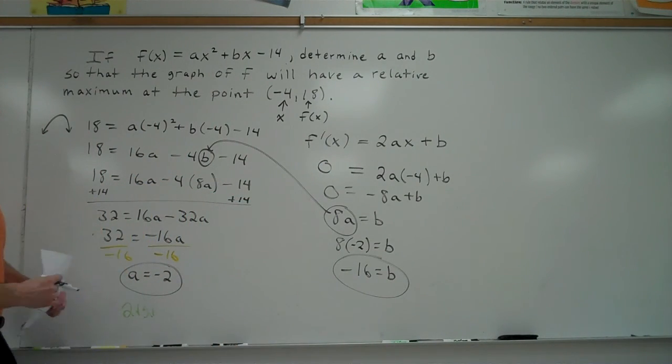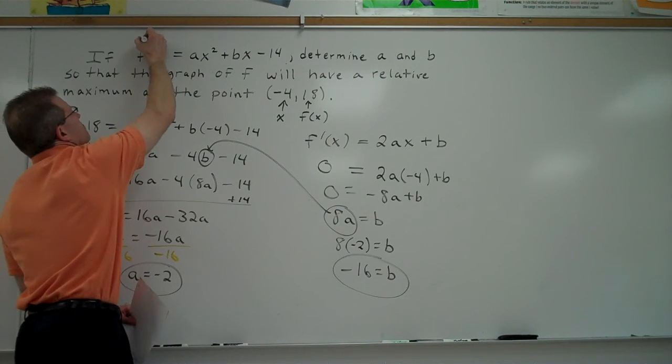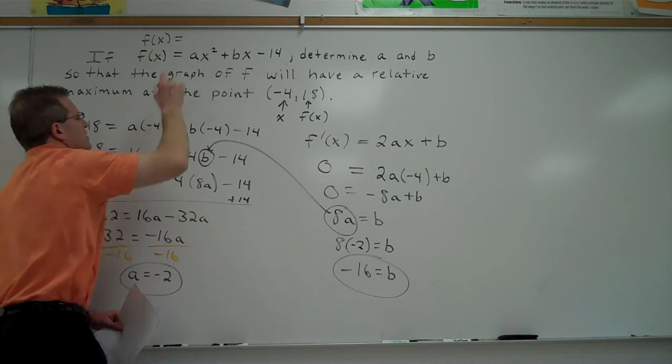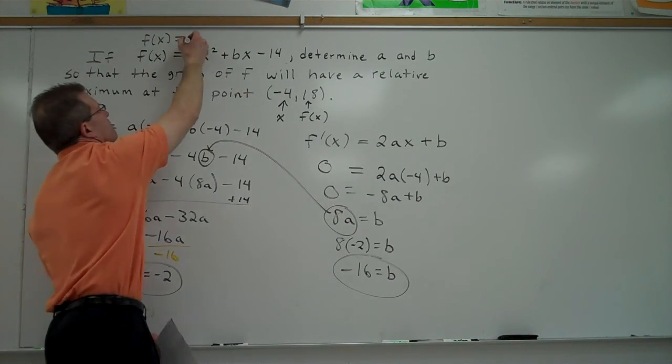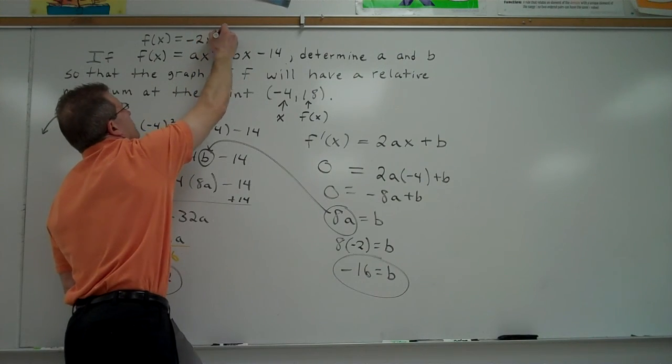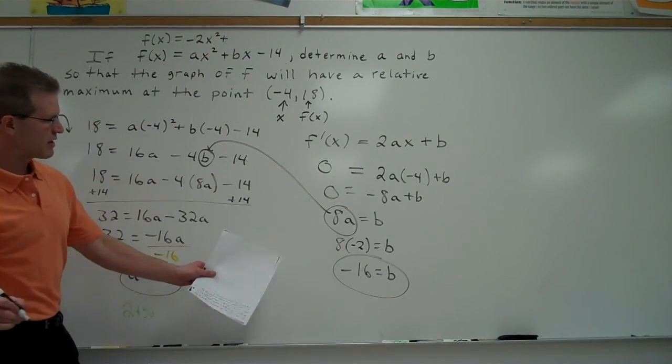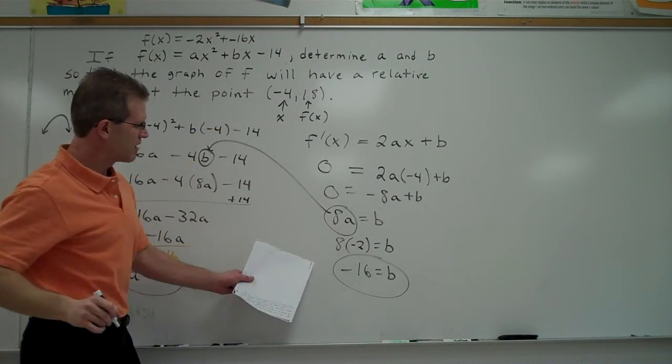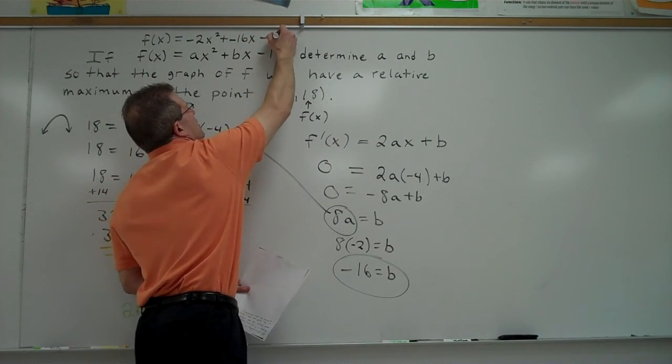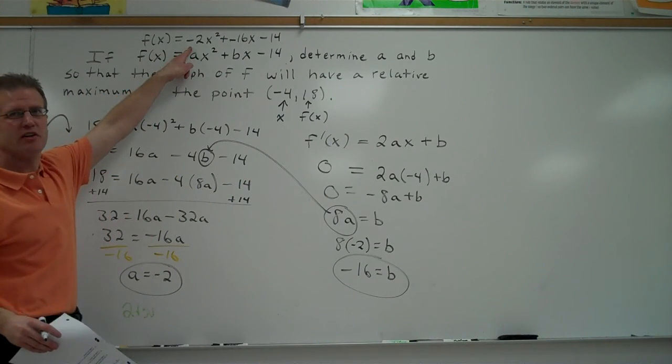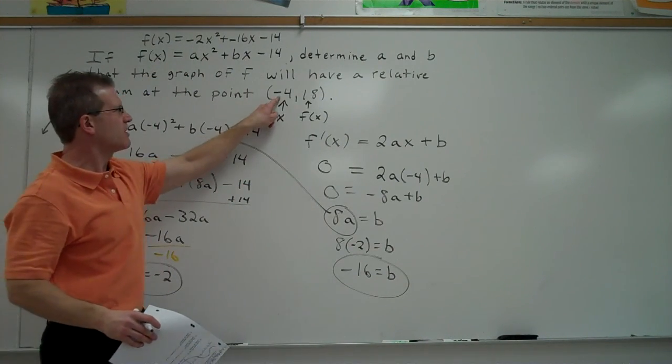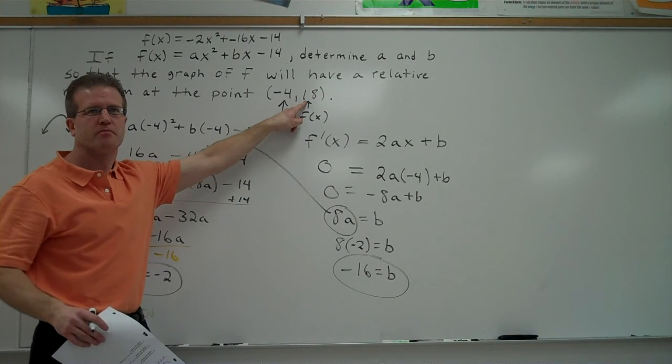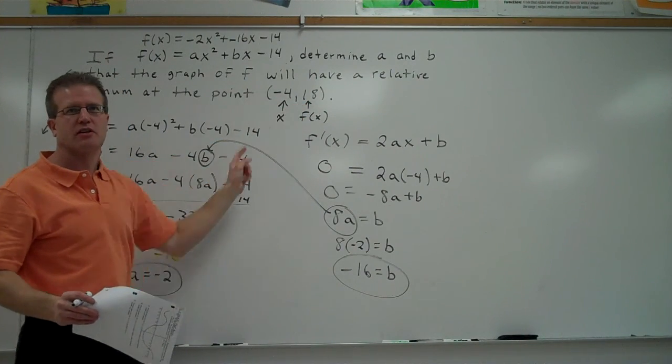Now, to check your work, just go up to your original function, f(x). For a, we're going to plug in negative 2. For b, we're going to plug in negative 16. And we have minus 14. You just graph this. You can graph it on your graphing calculator. And then go to the point negative 4, 18 and make sure that's really maximum. If it is, then you know you did it correctly.